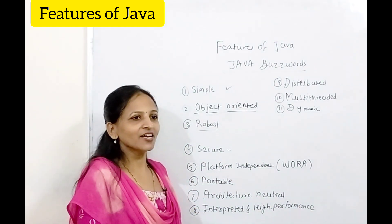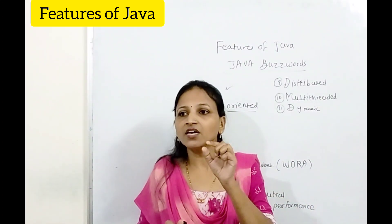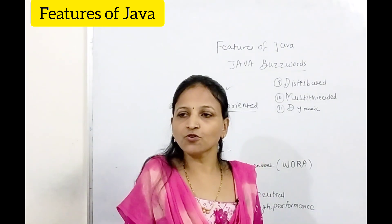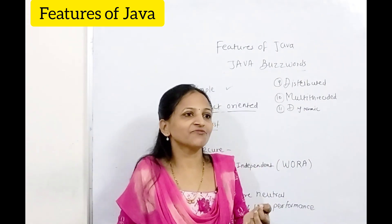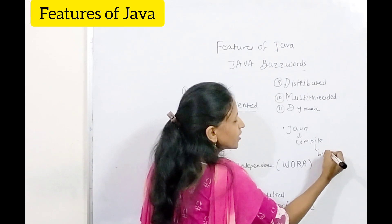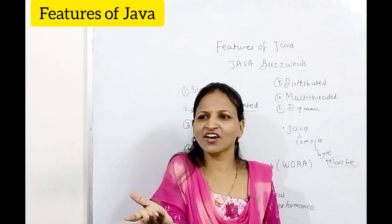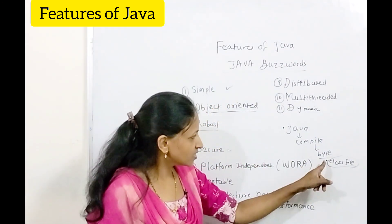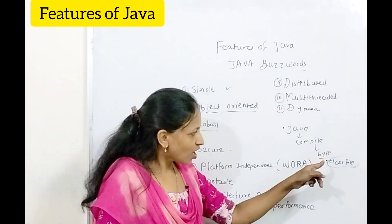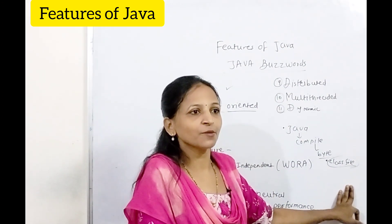The next feature is platform independent. Whenever you write a Java program, it is compiled and bytecode is generated. That bytecode is not machine code — always remember, it is not in machine language. The bytecode is a .class file. You write a program as a .java file, compile it, and it generates a .class bytecode file. In C or C++, the compiler generates machine language code directly. But in Java, the JVM acts on the .class file and generates machine-specific code.